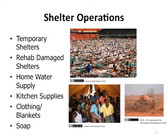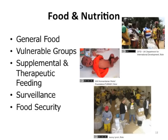Food and nutrition operations include general food availability and food security, with particular attention to vulnerable groups — especially those vulnerable to severe malnutrition — supplemental and therapeutic feeding for special at-risk vulnerable groups, and surveillance and food security.